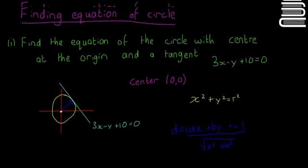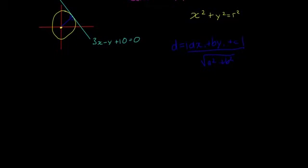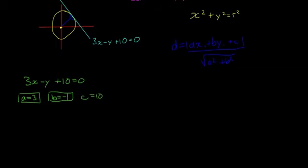So our line is 3x minus y plus 10 equals 0. So our a is going to be 3, our b is going to be minus 1, and our c is going to be 10.